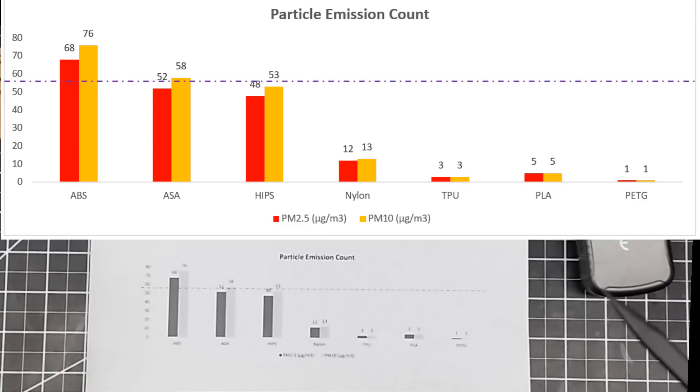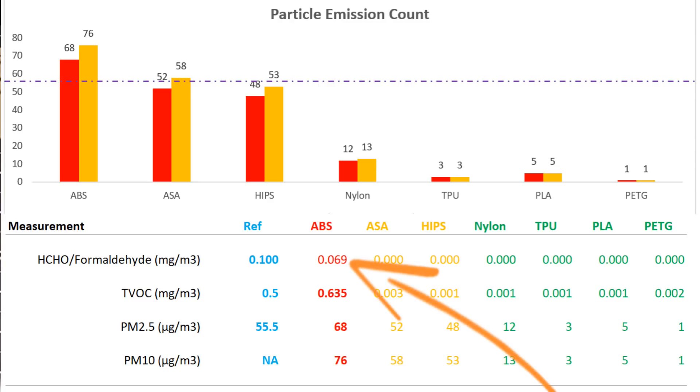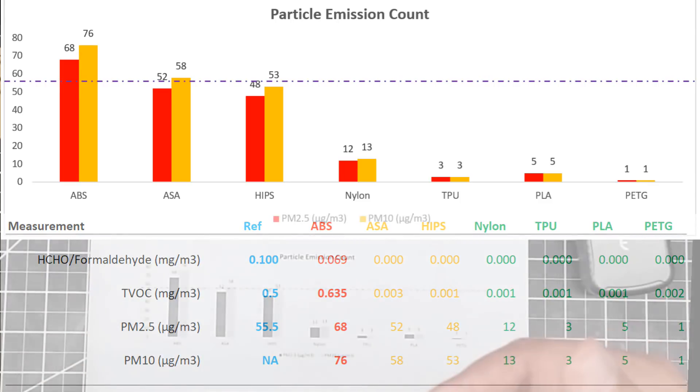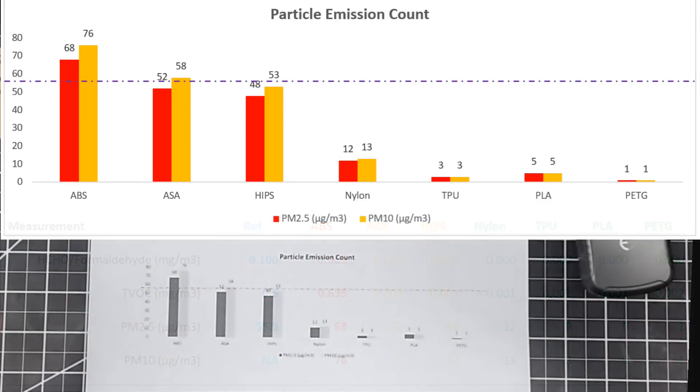So, ABS is clearly the largest offender. And not only did we see the highest particulates and above typical safety levels for particulate release, but we also saw significant or measurable formaldehyde releases, which this was really the only plastic that I saw a formaldehyde release. And this is one of the reasons I went back and I did ABS several times, and the existence of the formaldehyde was there in each test.